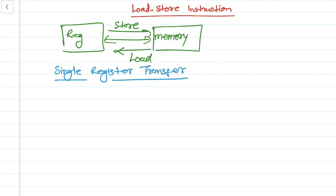In a single register transfer, it loads only a single register or stores a single register into the memory or loads from the memory. It has a fairly simple syntax. The syntax of single register transfer instructions: it has LDR which loads data from a memory address, then an optional condition, then whether we want to load a single byte — that's 8-bit — or a half word, or a signed half word, and then there is an address.